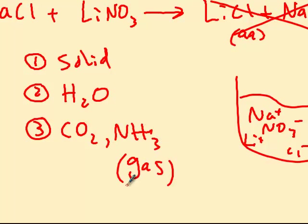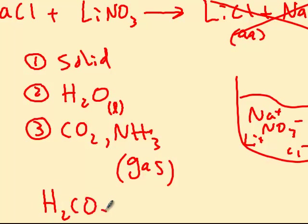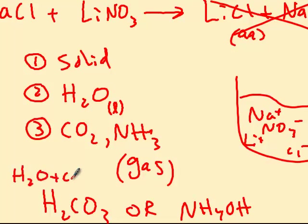The third condition is if you make either CO₂ or NH₃ gas. We've already learned that if you end up with H₂CO₃ as a product, it decomposes into H₂O and CO₂, and if you get NH₄OH as a product, it gives H₂O and NH₃. So if either of those appear as products, a reaction occurs. Also note: you don't write aqueous for water — you put L for a pure liquid.